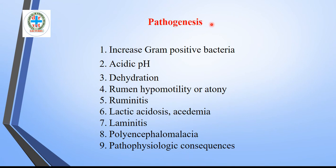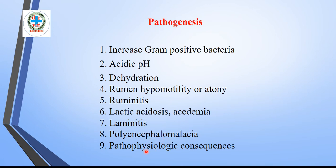The pathogenesis of acid indigestion or grain overload involves a series of steps. There is an increase in gram-positive bacteria, the rumen content becomes acidic, the animal shows dehydration and rumen hypomotility or complete atony, inflammation of the ruminal wall (rumenitis), absorption of lactic acid into circulation causing lactic acidosis and acidemia, inflammation of the sensitive lamina of the foot causing laminitis, and degeneration of the central nervous system causing polioencephalomalacia.